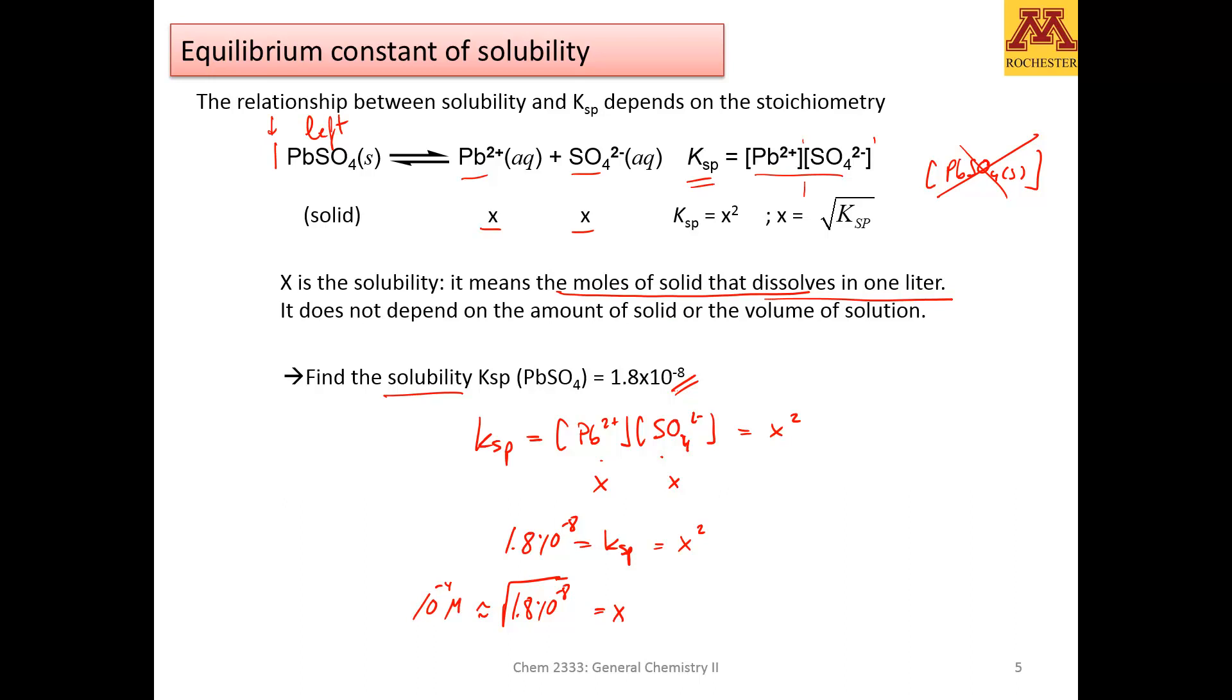In other words, if you have some water and you throw in there some solid of lead sulfate, the amount of moles that will leave the solid will be 10 to the negative 4 moles in one liter. Or in other words, in this case, the concentration of lead will be equal to the concentration of sulfate in solution.